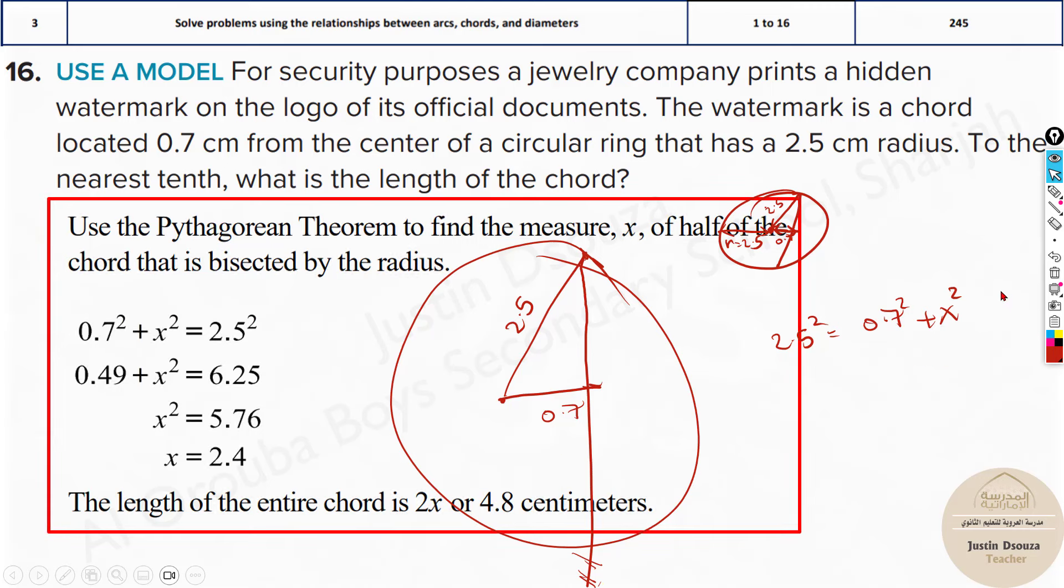Now I forgot, 2.4 is the x value. What did they ask? It's not that. They have asked you the length of the chord. Please don't make the mistake I just now made. We got 2.4, that is this distance, just half of the chord. Multiplied by 2, again over here there's 2.4. So that is 4.8. That is the answer. 4.8 centimeters is the length of the chord.